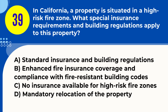Question 39. In California, a property is situated in a high-risk fire zone. What special insurance requirements and building regulations apply to this property? A. Standard insurance and building regulations. B. Enhanced fire insurance coverage and compliance with fire-resistant building codes. C. No insurance available for high-risk fire zones. D. Mandatory relocation of the property. Answer: B. Enhanced fire insurance coverage and compliance with fire-resistant building codes. Explanation: Properties in high-risk fire zones in California often require enhanced fire insurance and must comply with specific building regulations that include fire-resistant materials and design.